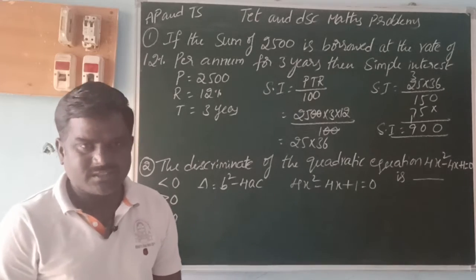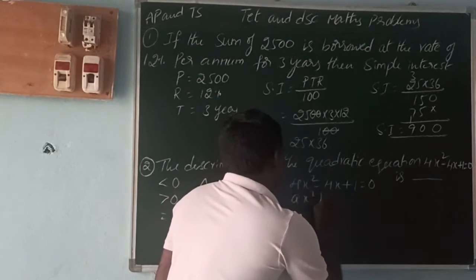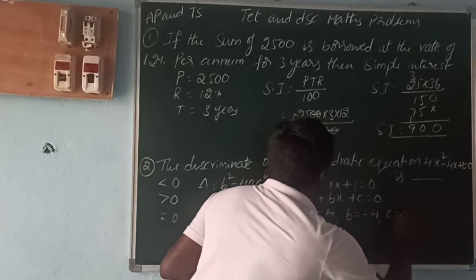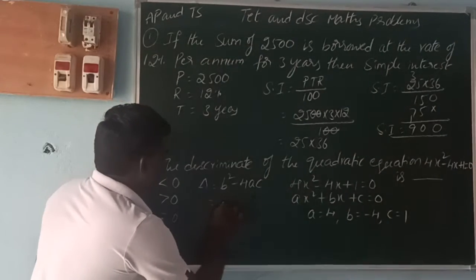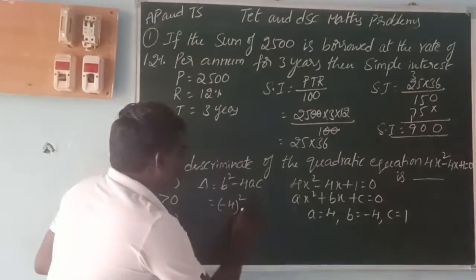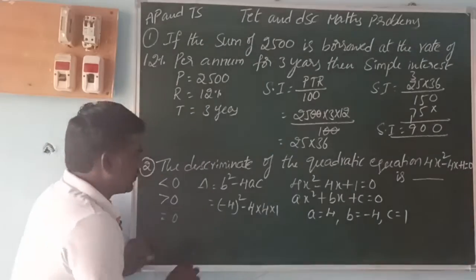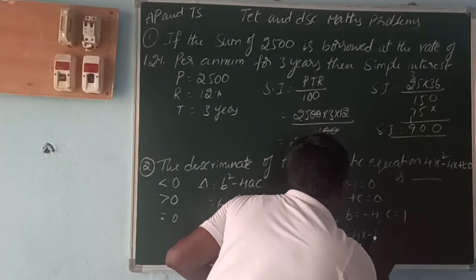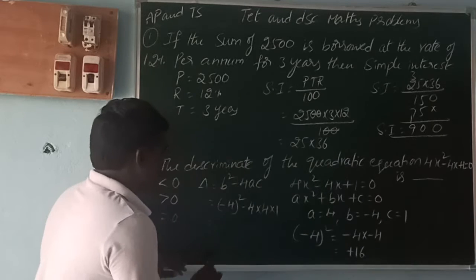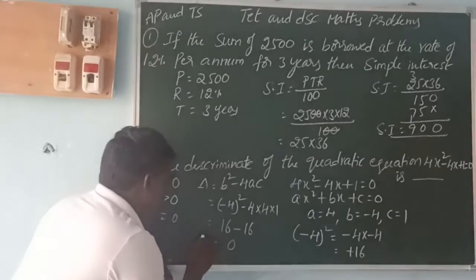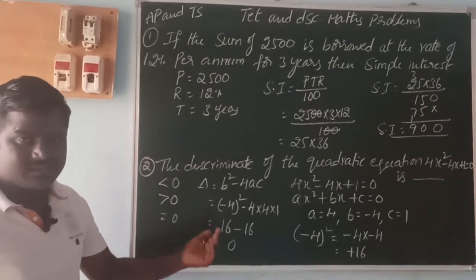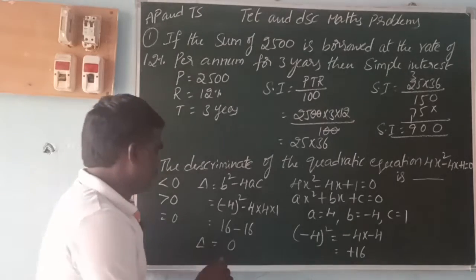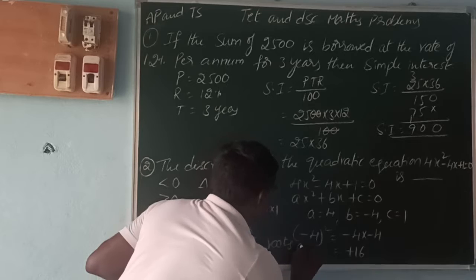Comparing 4x squared minus 4x plus 1 with ax squared plus bx plus c equals 0, we get a=4, b=-4, c=1. Substituting: delta equals (-4) squared minus 4 times 4 times 1, which equals 16 minus 16 equals 0. Since delta equals 0, the roots are equal.